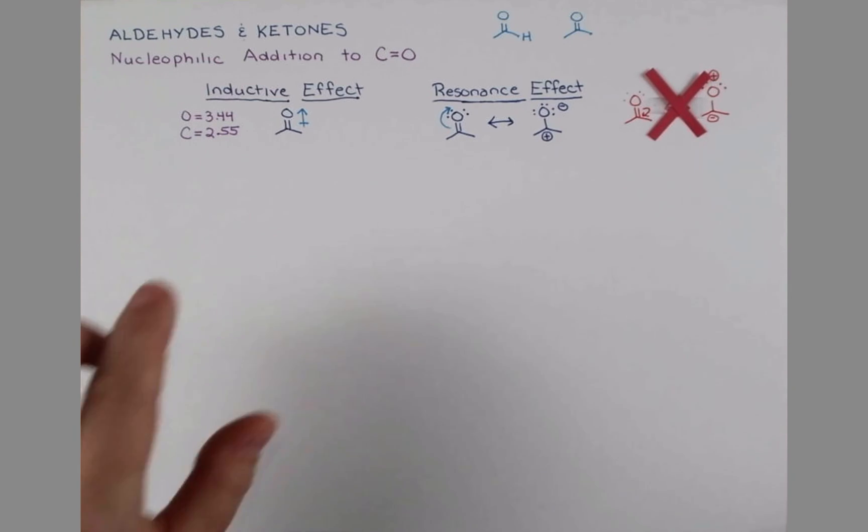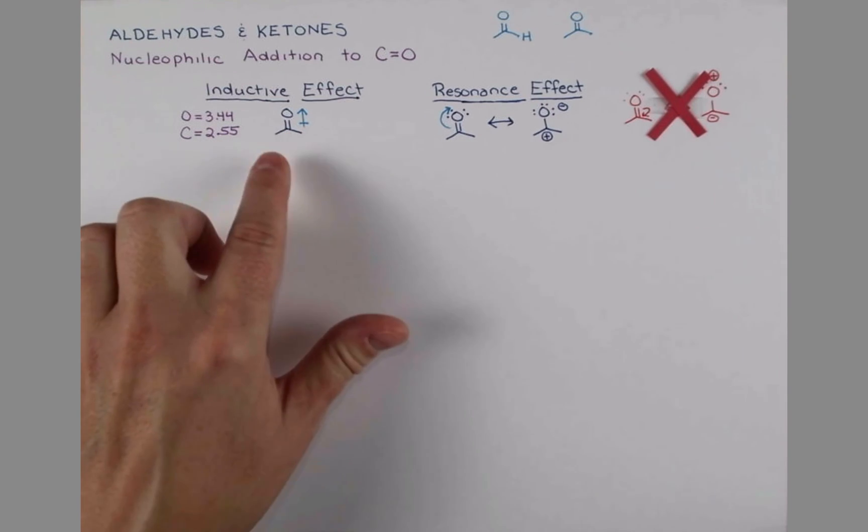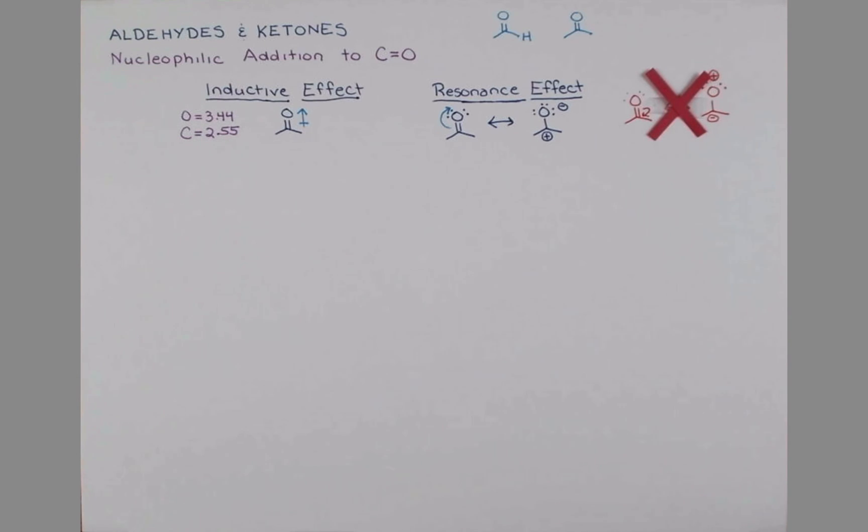Now that we know that the carbon of the carbonyl has all this positive character, we can even say it's delta positive. And to complete our dipole on this molecule, we can say the oxygen is delta negative.